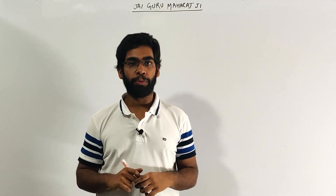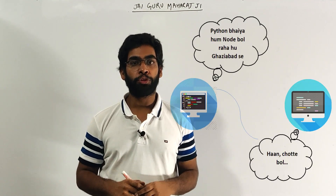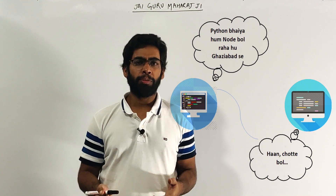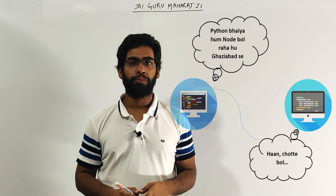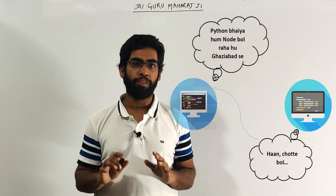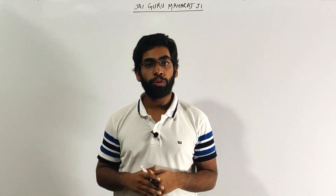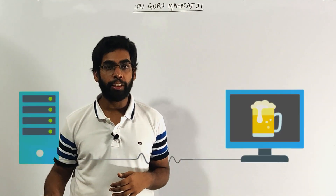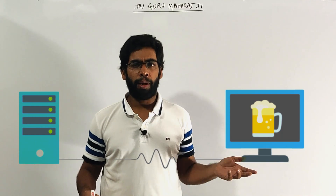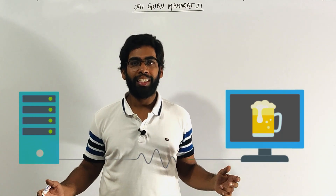An API, or application programming interface, is a way in which two applications can talk to each other. These could be any application. An application is a piece of code which is running somewhere and doing something — it could be a database, a web page, or a web app. They just want to share some resources.